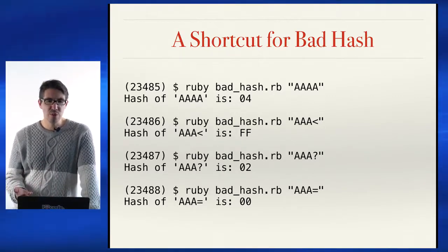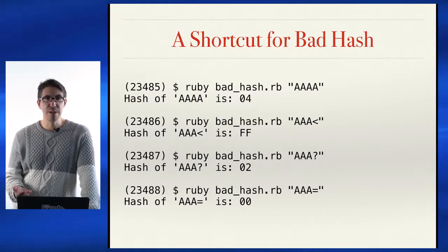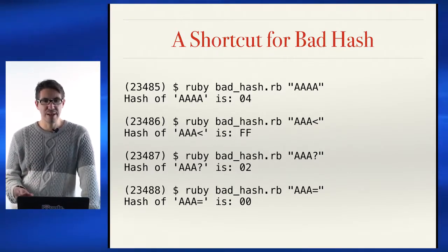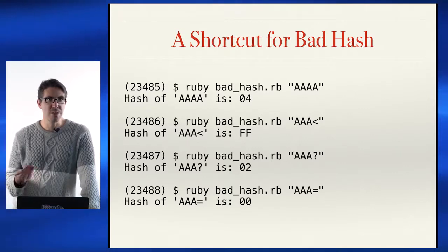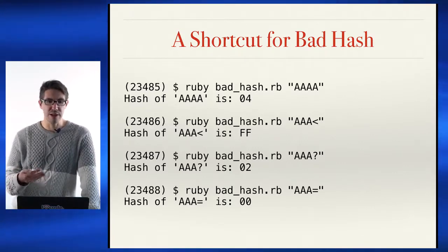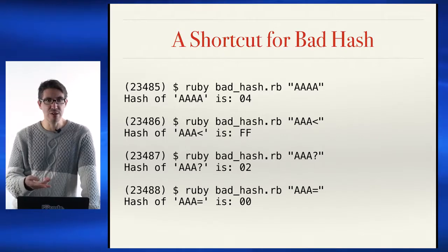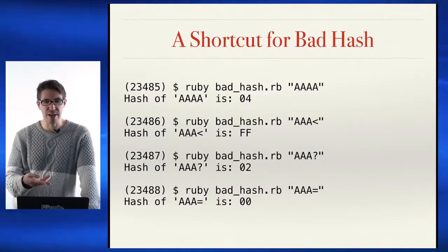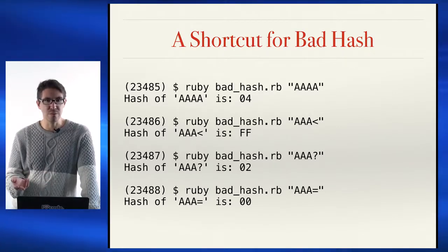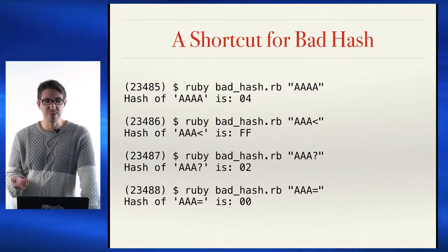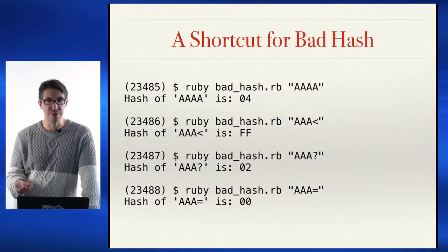We can see this is problematic because I don't have to try on the order of 2 to the n — this is 2 to the 8th. So I should have to try on average about 128 different possible values before I get something that hashes to 00.